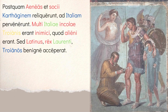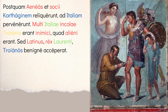The story goes: 'Postquam Aeneas et socii Carthaginem reliquerunt, ad Italiam pervenerunt' — after Aeneas and his allies, the socii, his Trojan allies, left behind Carthage (reliquerunt is perfect tense), they arrived at Italy. Then: 'Multi Italiae incolae Trojanis inimici erant quod alieni erant' — many inhabitants of Italy were enemies (inimici) to the Trojans because they were alien, foreign. They viewed the Trojans as basically invaders.